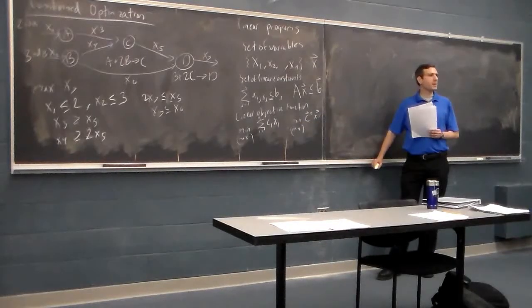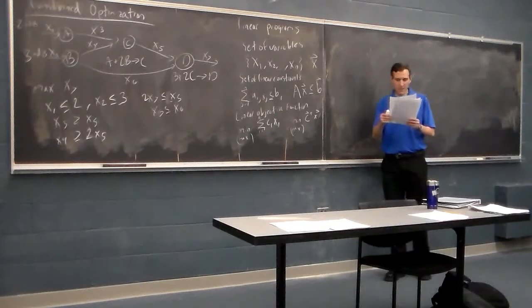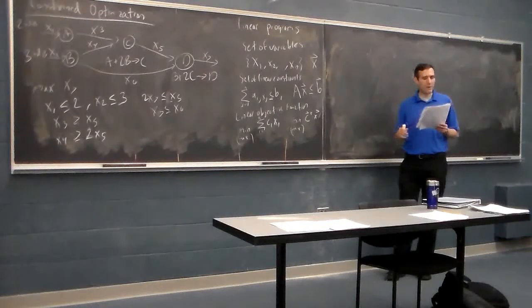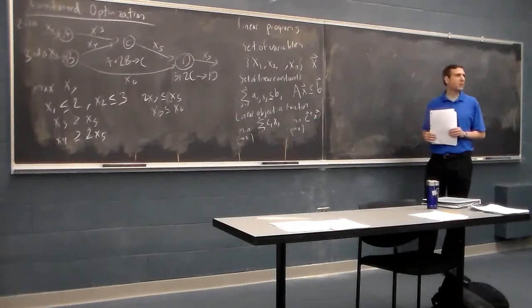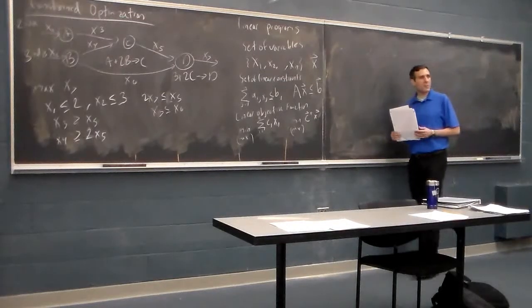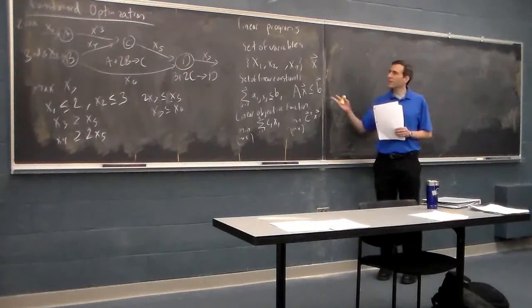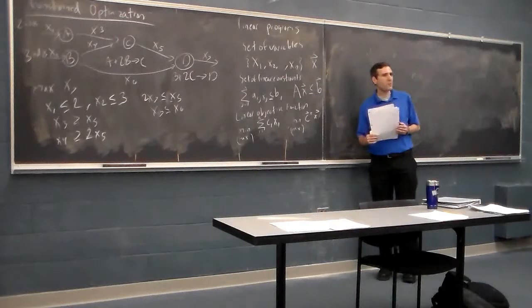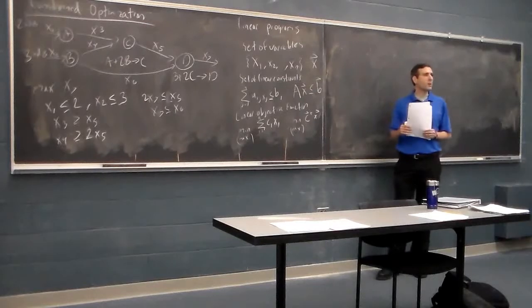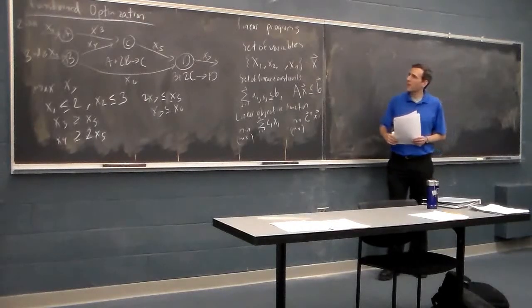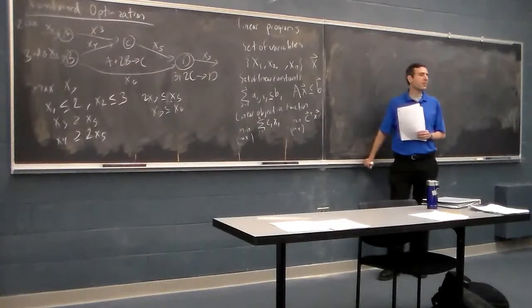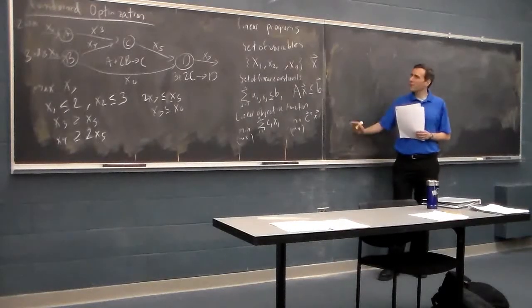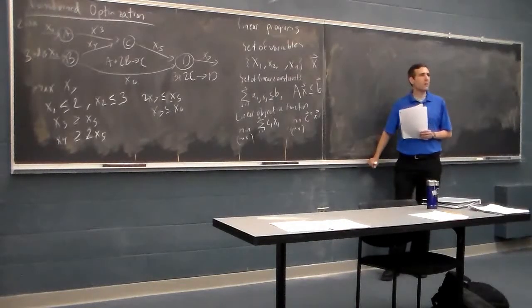The final element we need is a linear objective function: minimize or maximize the sum from i equals 1 to n of ci times xi, where the c's are constants — abbreviated as min or max c-transpose x, where c is a vector of coefficients. That is the general form of a linear program. Many of the optimizations we've seen before can be coded in this form, though if there's a special-purpose algorithm that will be faster.